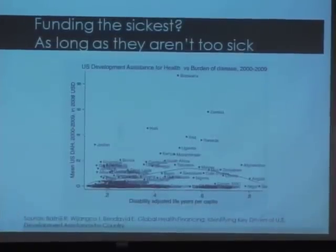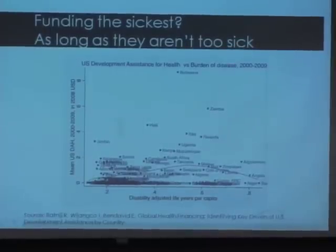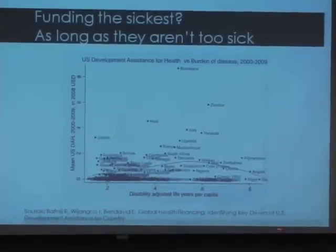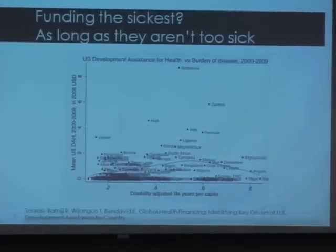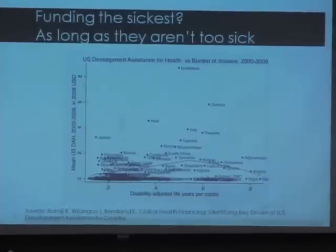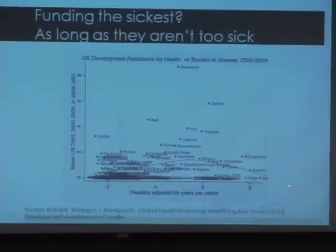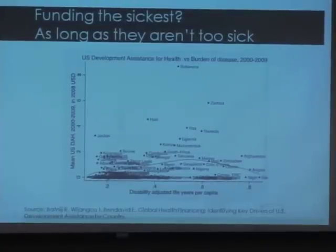Are we funding the sickest countries? On the x-axis we have disability-adjusted life years per capita — a measure of how sick people in that population are — and on the y-axis, average development assistance for health from 2000 to 2009. For the most part, as countries get sicker they get more money, but only up to a certain point. The sickest countries — Niger, Angola, Sierra Leone, Afghanistan, Congo — are relatively left out because donors think there's not enough infrastructure or stability to do any good.